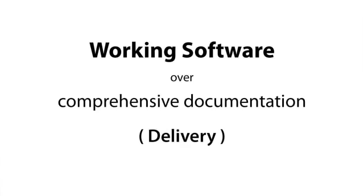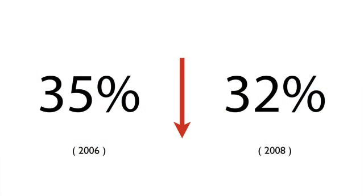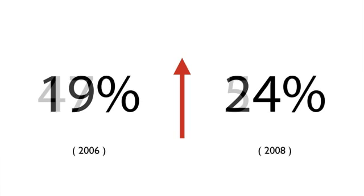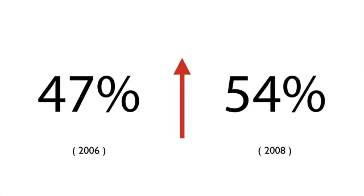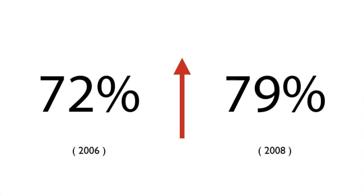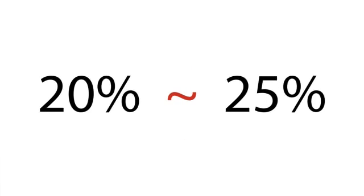The second value we're going to look at is delivery, which is written in the manifesto as working software over comprehensive documentation. This comes down to two big points: building the right thing and focusing on quality. The Standish Group every year releases a report called the Chaos Report — the latest one was in 2009 and looks at projects between 2006 and 2008. Project success dropped 3% down to 32%, project failure rates went up by 5%, cost overruns went from 47% to 54%, time overruns were up 7% to hit 79%, and feature use is holding steady at between 20 and 25%. So a lot of projects aren't doing well, and a majority of features being developed aren't even being used.